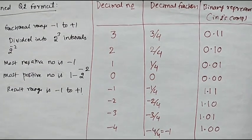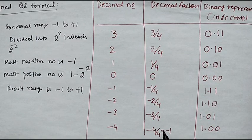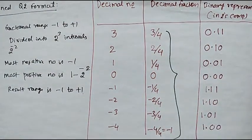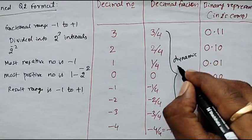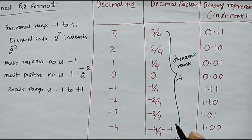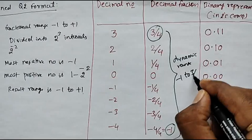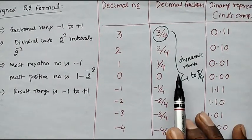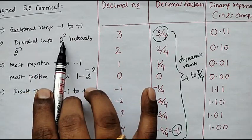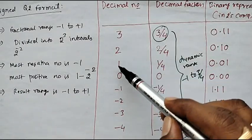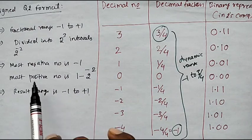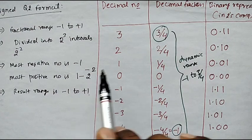So in this case, the dynamic range of fractional numbers varies from minus 1 to 3/4. In Q2 format, the numbers are divided into 2^3 intervals giving 8 intervals: 1, 2, 3, 4, 5, 6, 7, 8. The most negative number is minus 1 and the most positive number is 1 minus 2^(−2), which is nothing but 3/4.